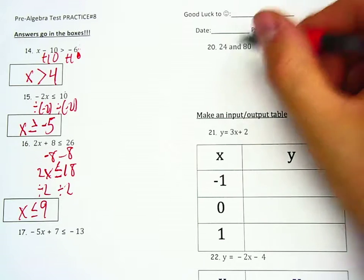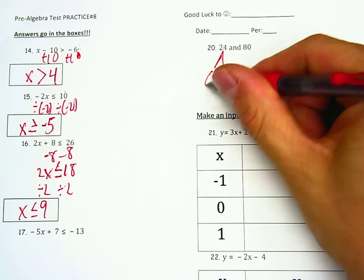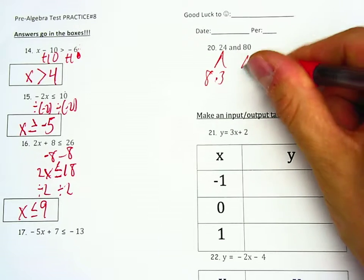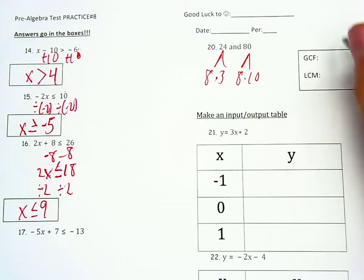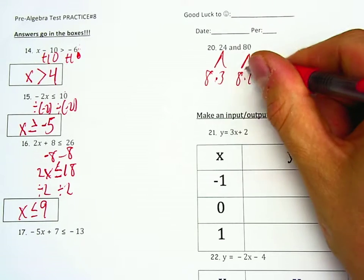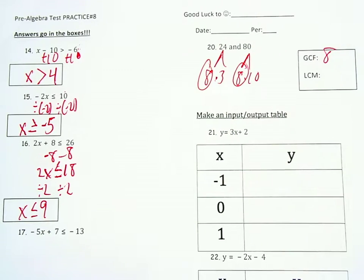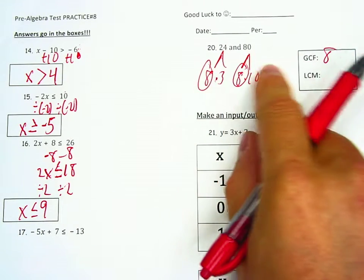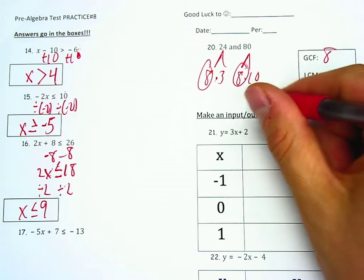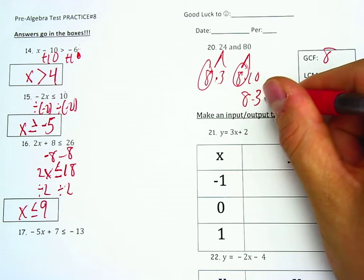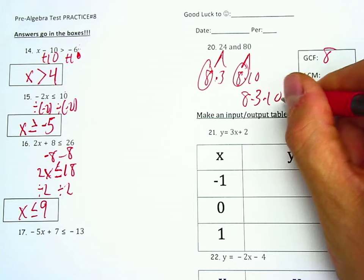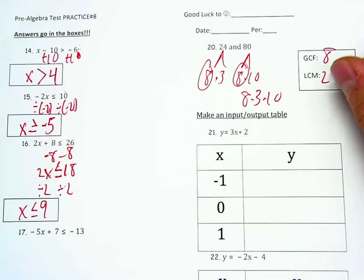On the right here, doing question 20. 24 is 8 times 3, and 80 is 8 times 10. So our greatest common factor is 8. They're both, in other words, multiples of 8. Our least common multiple is going to be 8 times 3 times 10. So 8 times 3 is 24, and then we times by 10, you move the decimal over once. So that's 240, our least common multiple.